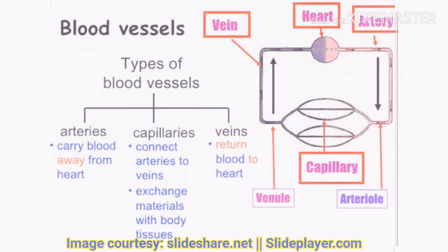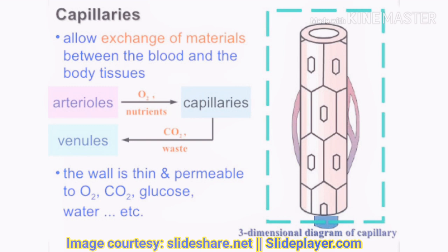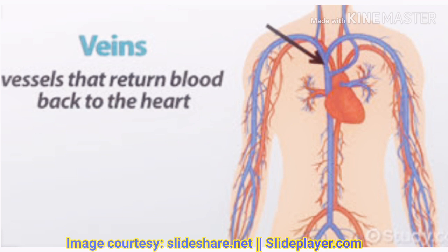Arteries branch to form smaller blood vessels called arterioles. The arterioles branch again and finally the branches become very tiny blood vessels called capillaries. Veins are the blood vessels which carry blood back to the heart.